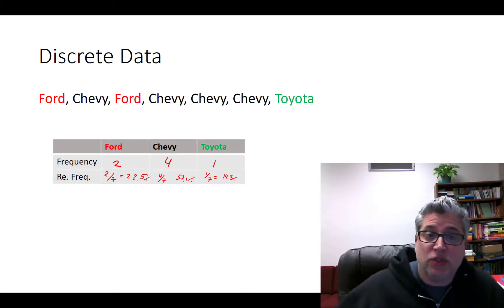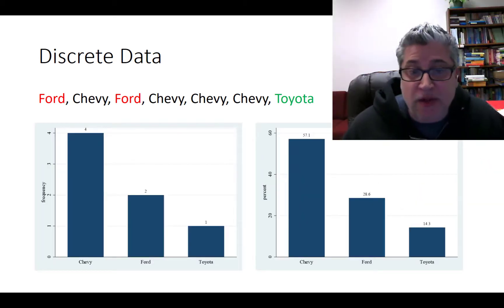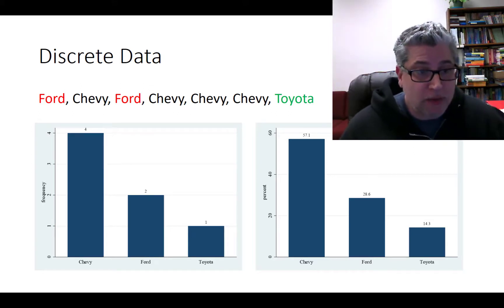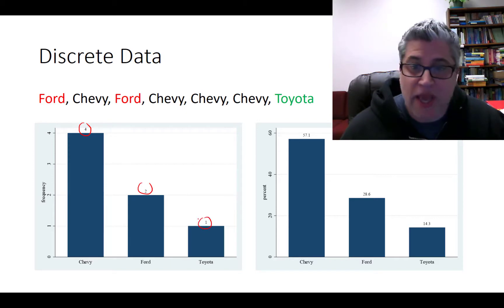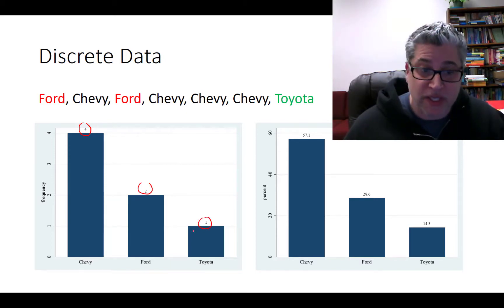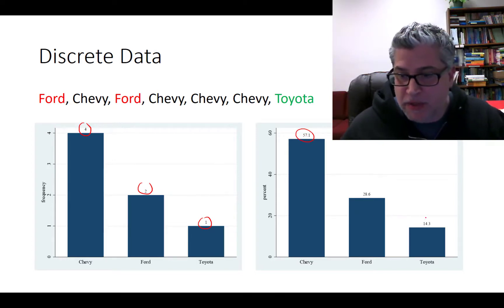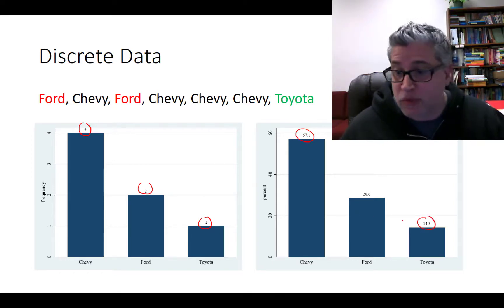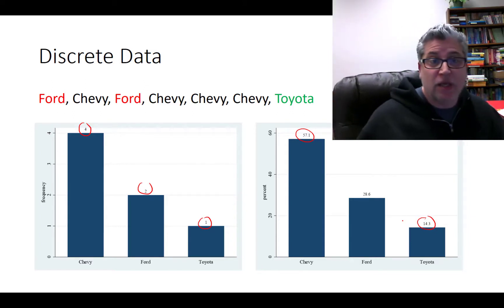We can put these into a visual format rather than a tabular format, and that's what we see here in these two graphs. For the one on the left, that just reports our frequencies: four Chevys, two Fords, and one Toyota — that's our frequency bar chart. We can also report relative frequencies: 57.1% for Chevys, which was four out of seven; 14.3% for Toyota, which was one out of seven, and so forth. This is just a visual way of representing the table.